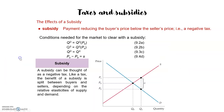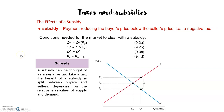A subsidy is just the opposite of a tax — it is a payment reducing the buyer's price below the seller's price, equivalent to a negative tax. The government has an interest in increasing the quantity exchanged in the market, say from Q0 to Q1. To achieve this, the government makes the price the seller receives (ps) greater than the market clearing price under perfect competition, and the price the buyers pay (pb) lower than the market clearing price. At pb the demand will be Q1, and at ps the supply will also be Q1.